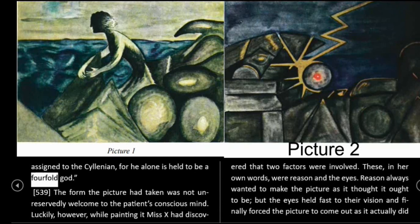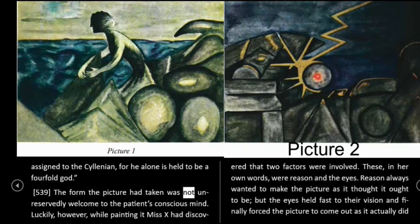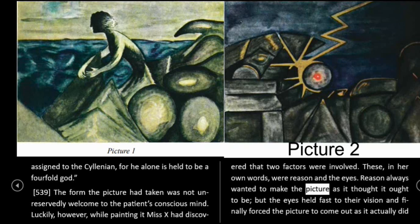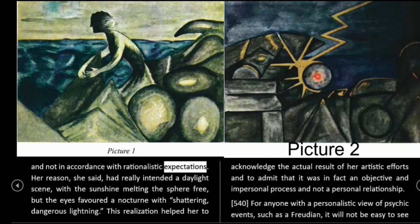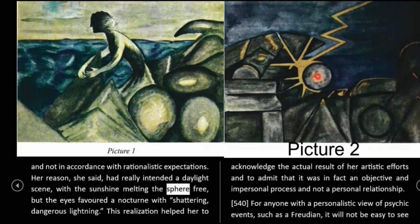539: The form the picture had taken was not unreservedly welcome to the patient's conscious mind. Luckily, however, while painting it Miss X had discovered that two factors were involved. These, in her own words, were Reason and the eyes. Reason always wanted to make the picture as it thought it ought to be, but the eyes held fast to their vision and finally forced the picture to come out as it actually did and not in accordance with rationalistic expectations. Her Reason, she said, had really intended a daylight scene, with the sunshine melting the sphere free. But the eyes favored a nocturne with shattering, dangerous lightning. This realization helped her to acknowledge the actual result of her artistic efforts and to admit that it was in fact an objective and impersonal process and not a personal relationship.